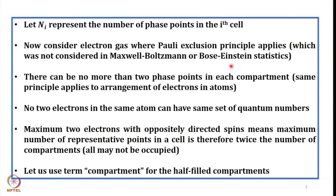Now you do not want more than two electrons or two phase points in each compartment. There can be no more than two phase points in each compartment, and this is the same principle that applies to the arrangement of electrons in atoms. In other words, no two electrons in the same atom can have the same set of quantum numbers. If all other quantum numbers are the same, at least spin will be different. This is the Pauli exclusion principle.